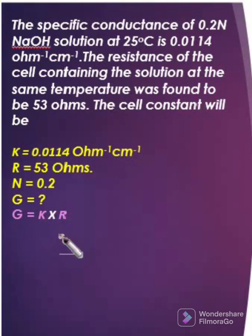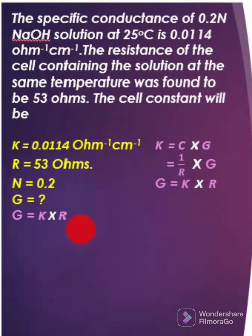How did you arrive at this formula? Actually kappa, that is specific conductance, is equal to conductance into cell constant. C is nothing but the reciprocal of resistance. This is how we are arriving at this formula.